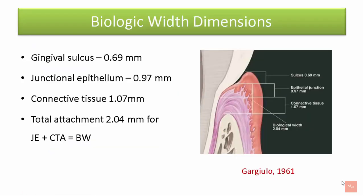The biological width has particular dimensions. The gingival sulcus was estimated to be 0.69 mm, the junctional epithelium 0.97 mm, and the connective tissue attachment 1.07 mm. The total length of the biological width is therefore 2.04 mm. Clinically, biological width is assumed to be 2 mm in length.